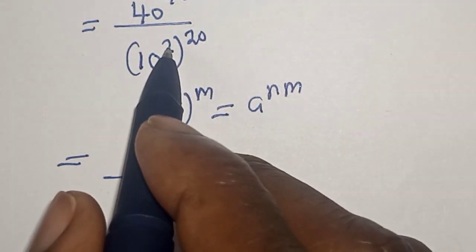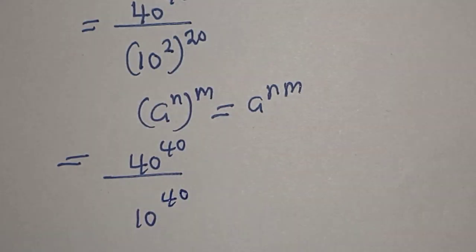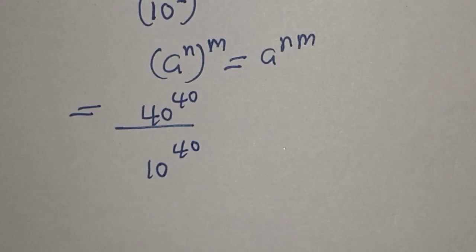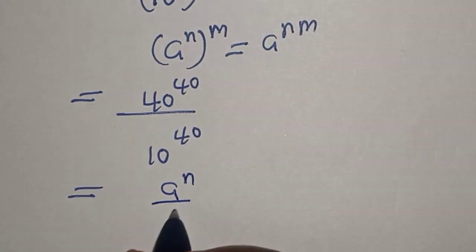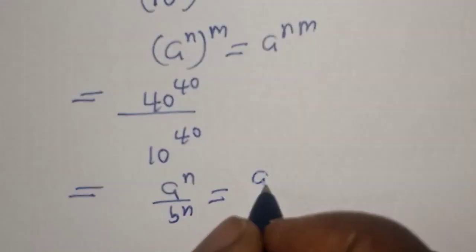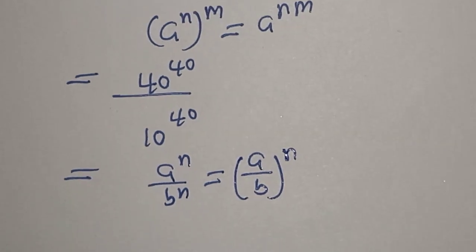10 to the power of 20 times 2, that is 40. Now you have a to the power of n over b to the power of n, which is equal to a over b raised to power n. And